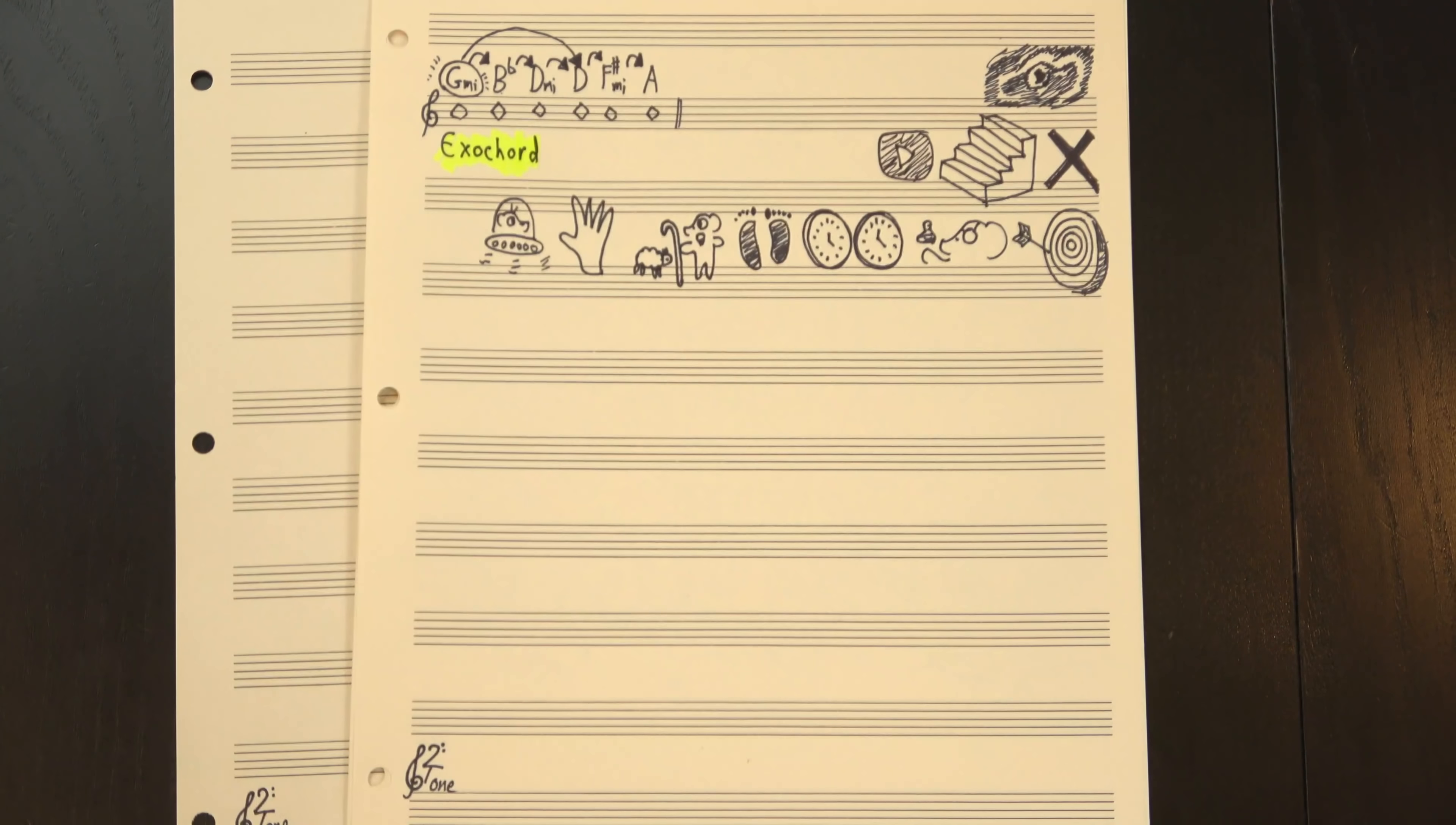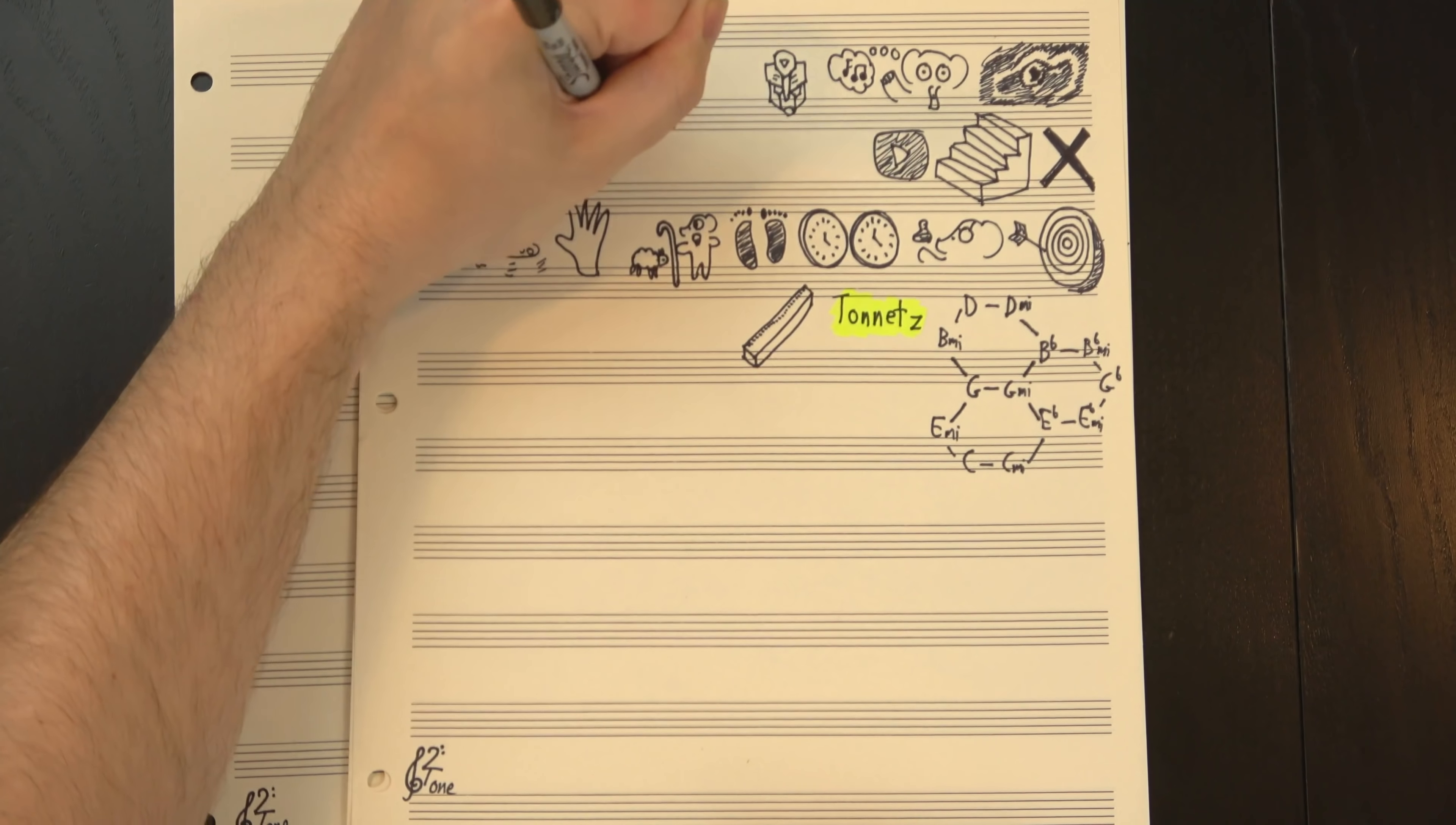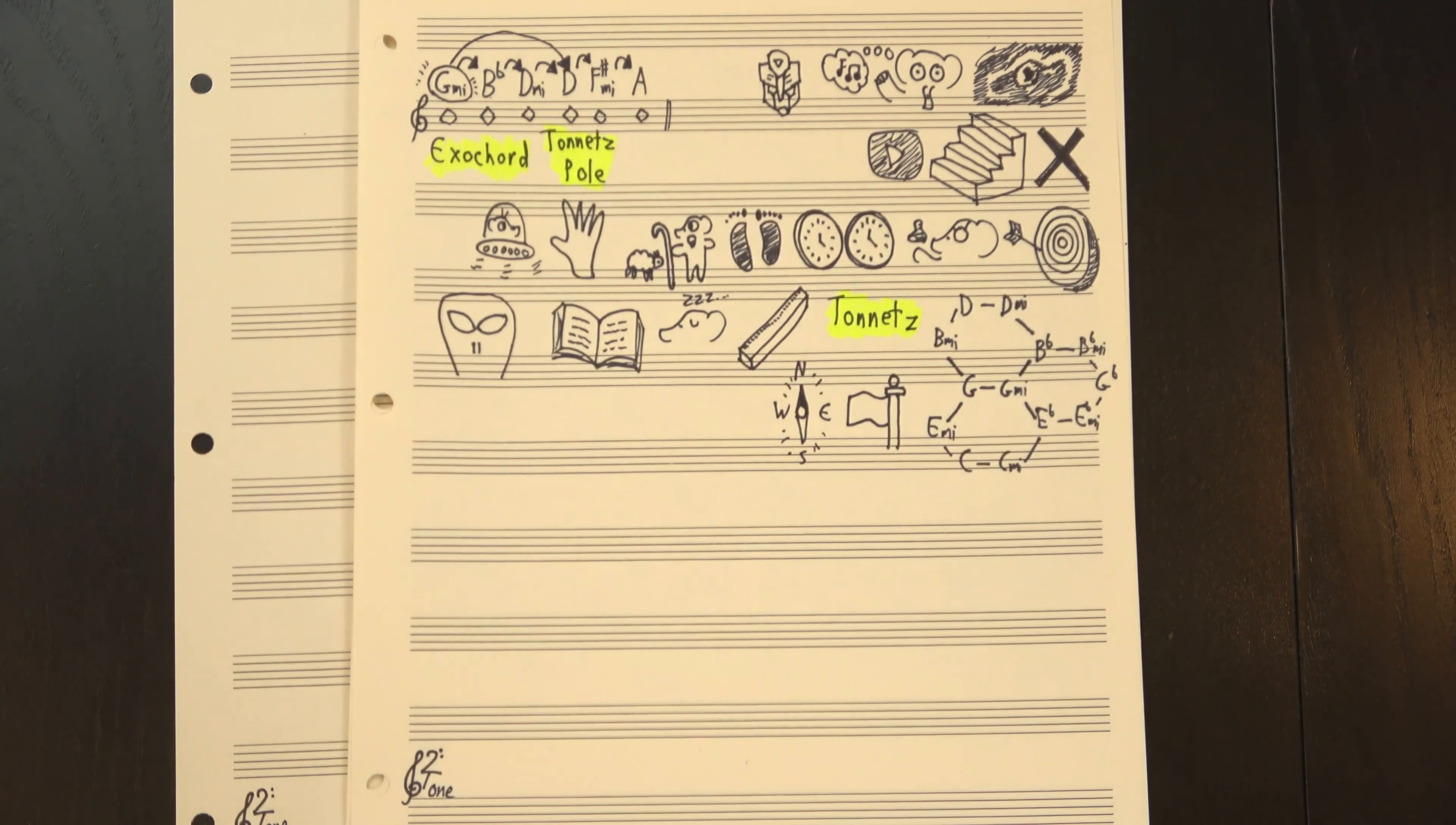I should note that, after publishing my initial video, another friend informed me that this relationship does already have a name. In transformational theory, the web of chords you build by repeating these three transformations is called the Tonnetz, which is German for tone net. Since this is the furthest distance you can find on the Tonnetz, Scott Murphy dubbed it the Tonnetz pole. It's not a well-known name, I could only find one written reference to it, but it's out there. Much like hexatonic pole, I don't think it tells you much about the relationship unless you already know this obscure music theory structure, so while it's a perfectly fine name, I think I'm gonna stick with Exochord. It just sounds cooler.